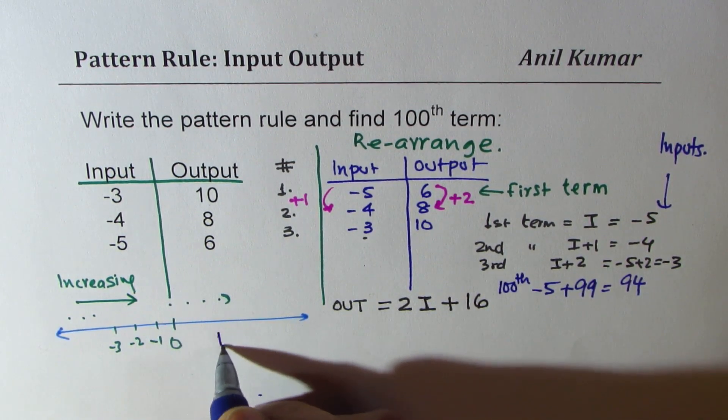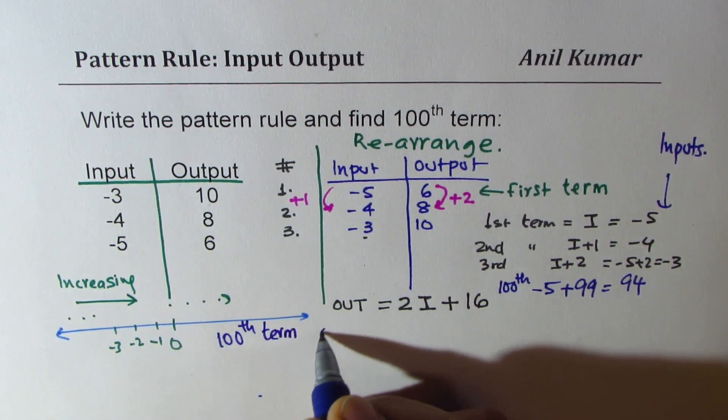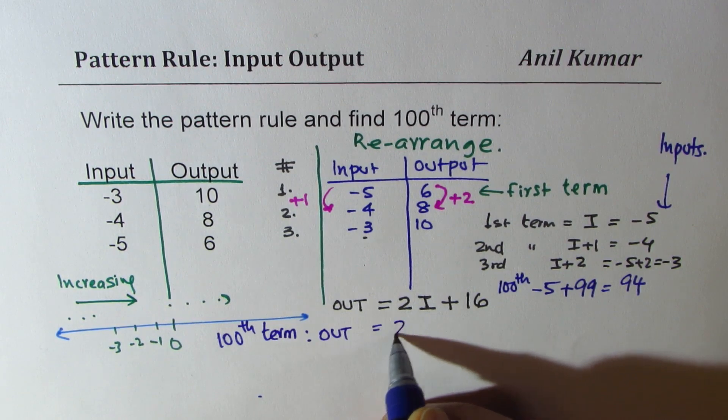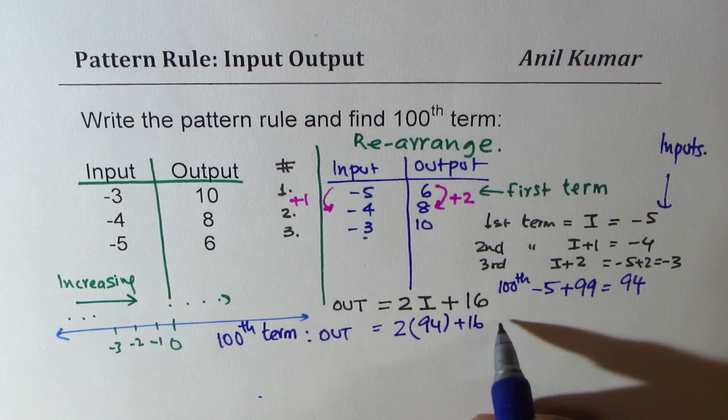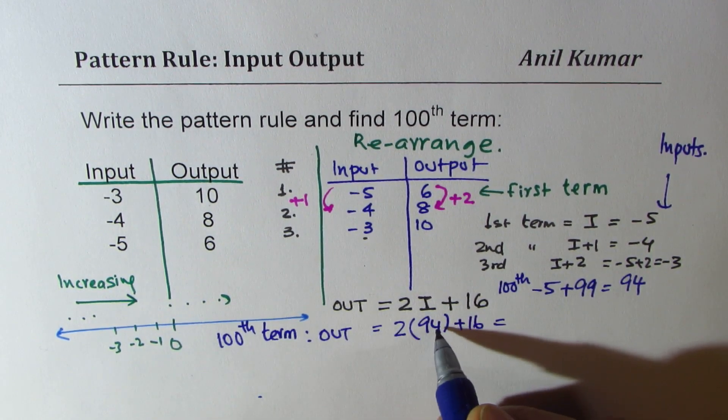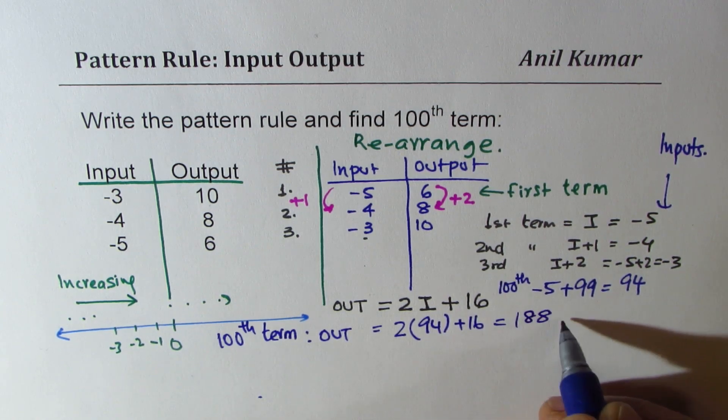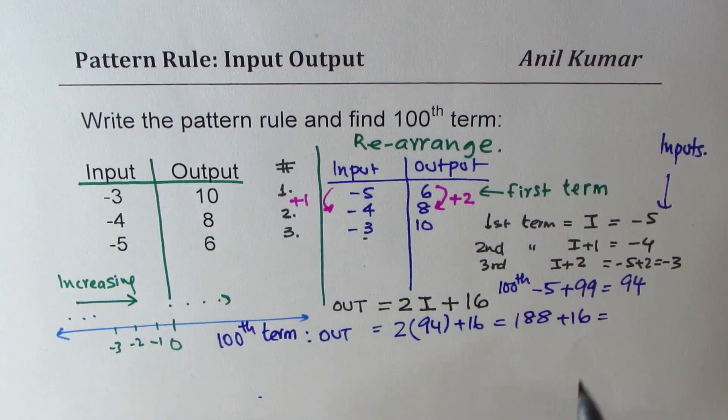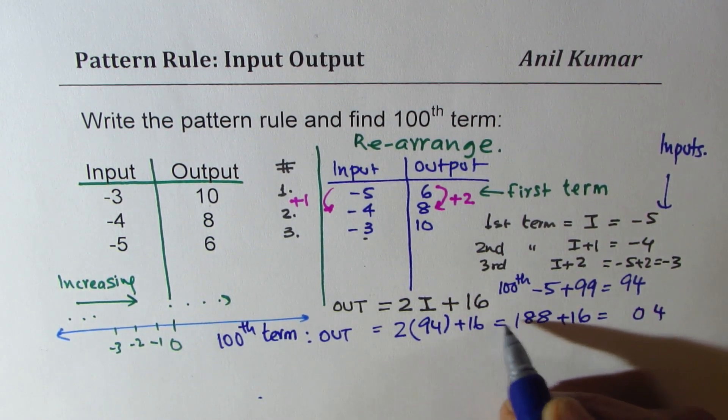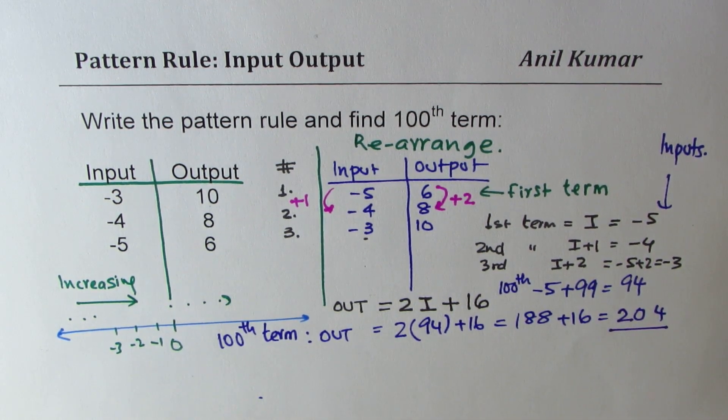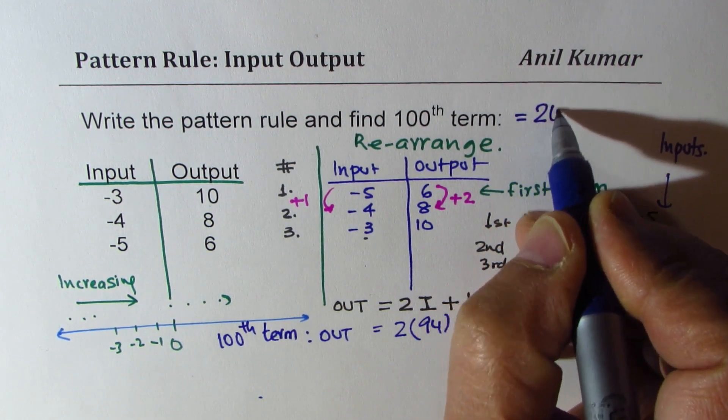So to find the hundredth term, what should I do? I will get an output which is two times the input is 94 not 100 plus 16. So now we will multiply: four times two is eight, nine times two is 18, and to this we are going to add 16. Six plus eight is 14, and then you get 204. So 204 is your hundredth term.